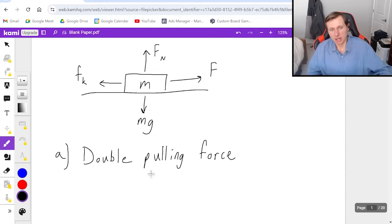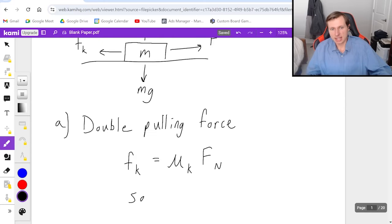Okay, so here's the solution. If I'm doubling the pulling force, that means I now have 2F. But we know the equation for kinetic friction, Fk, is only dependent on two things. It's dependent on mu k, the coefficient of friction, and we're dependent on the normal force Fn. If I pull harder, that's not going to change either of these variables, meaning Fk stays the same for part A.